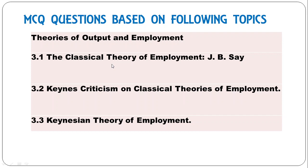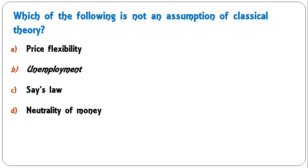We will be discussing questions on classical and Keynesian theory of income and employment. First question: which one of the following is not an assumption of classical theory? Options: price flexibility, unemployment, Say's Law, neutrality of money. The correct answer is unemployment. All other three — price flexibility, Say's Law, and neutrality of money — are assumptions of classical theory. Classical theory assumes full employment, not unemployment. So B is the correct answer.